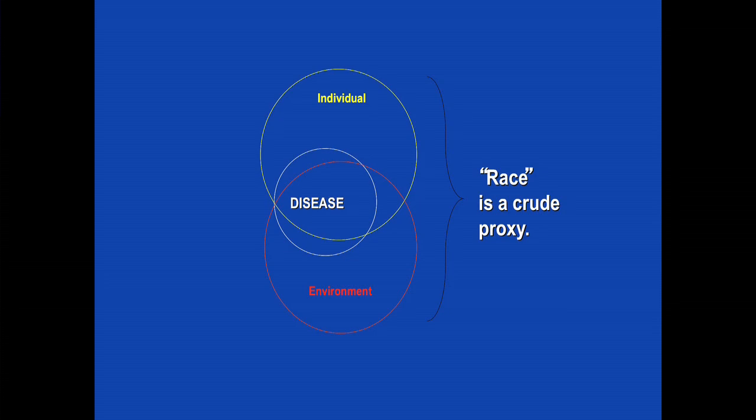Race is a crude proxy for some shared biology — meaning the individual's biology, the genotypes — and also the shared environment, which includes SES, diet, lifestyle, and different exposures. It becomes really problematic when we use race as this proxy. We should instead tease apart those potential variables and study the biology of the individual and the environment to understand complex disease.